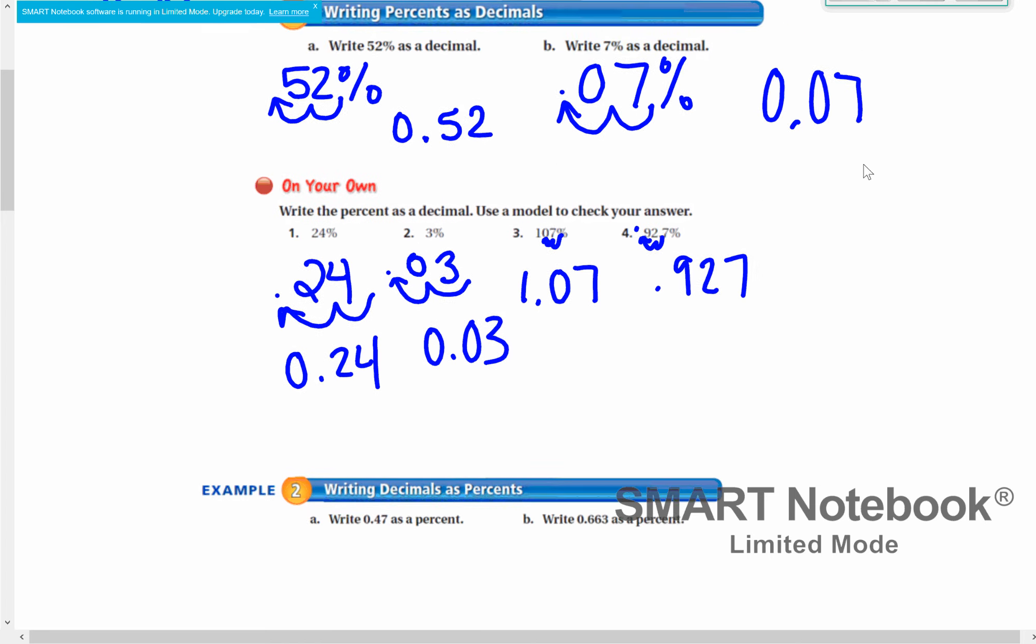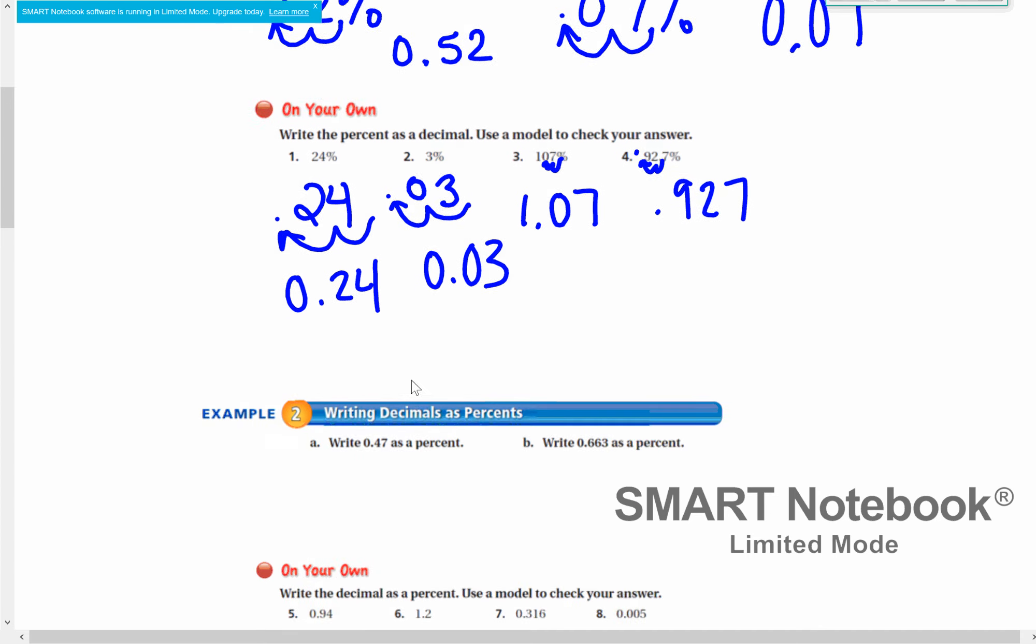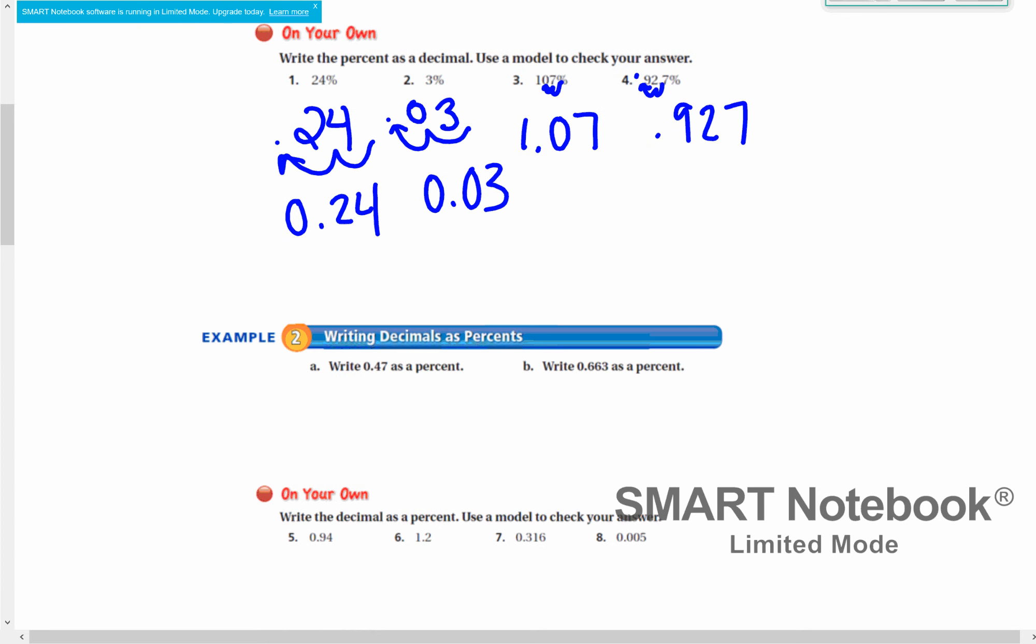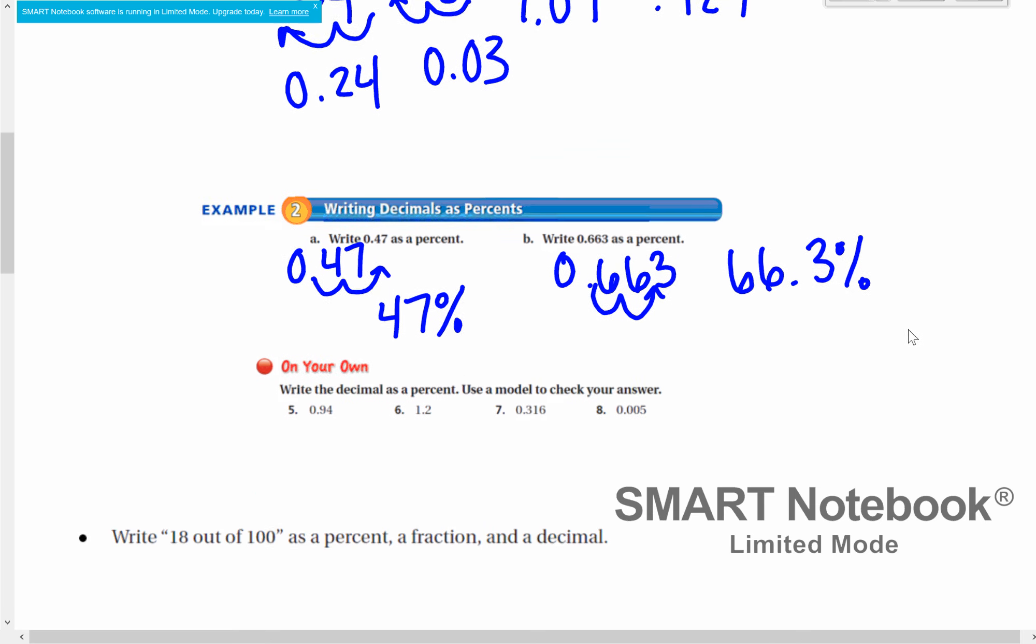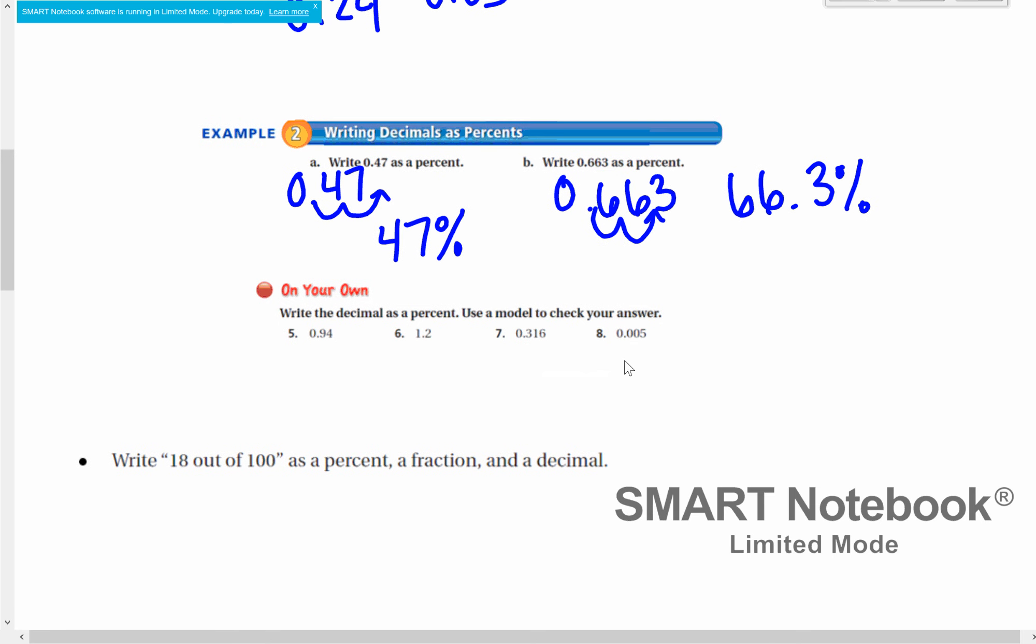The next kind of example is writing a decimal as a percent. So we're going the opposite way. When we have 0 and 47 hundredths, we move that decimal place 2 to the right to get 47%. Same thing over here. We have 0 and 663 thousandths, we move it 2 to the right to get 66.3%. I would like you to pause the video, try the next four on your own.